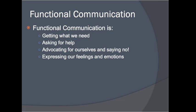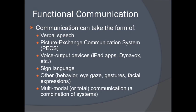We use functional communication to get what we need, ask for help, advocate for ourselves, and express our feelings to one another. When we think about communication, we often think about a conversation using verbal speech. And while many individuals with autism do use verbal speech as their primary means of communication, many use other modes of communication.